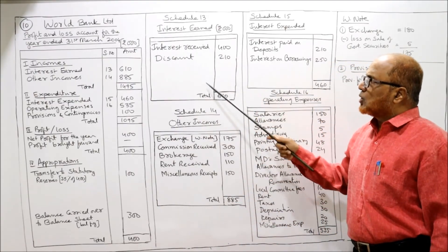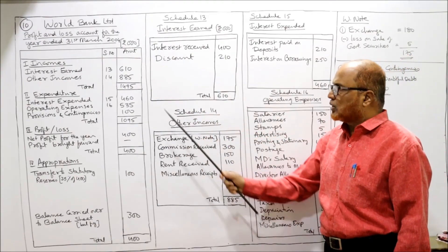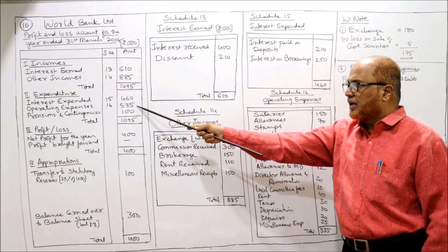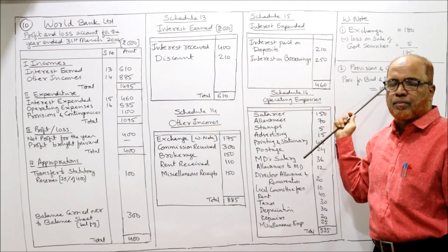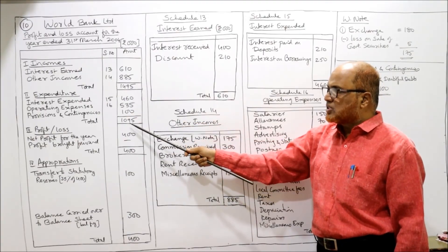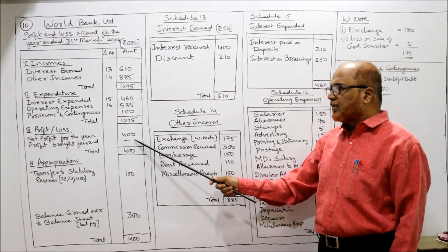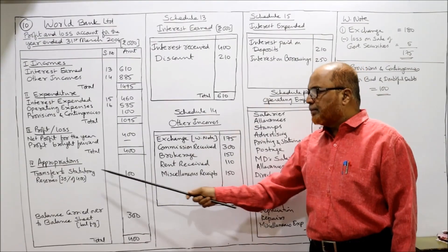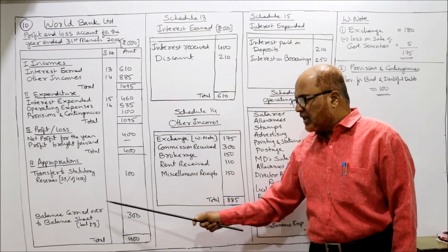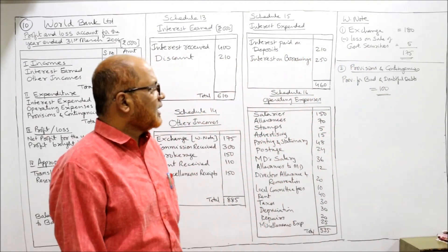Take the total of each schedule. Schedule 13 total is 610, schedule 14 total is 885, total income 1,495. Interest expended schedule 15 is 460. Operating expenses schedule 16 total is 535. Provisions and contingencies — provision for doubtful debts 100 — total expenditure 1,095. So 1,495 income minus 1,095 expenditure = net profit of 400. No profit brought forward. Transfer 25% of 400 = 100 to statutory reserve. Remaining balance of 300 is carried over to the balance sheet. That is the end of problem number 10.